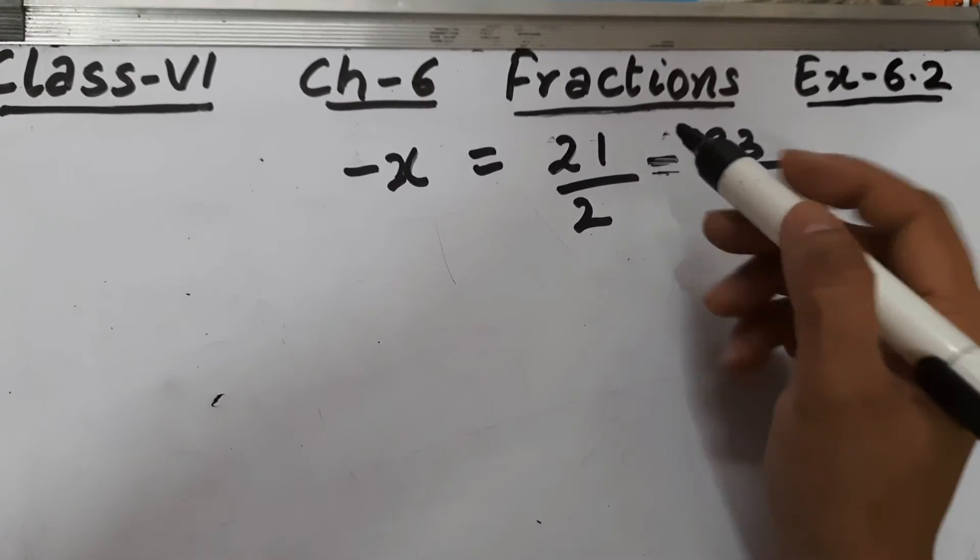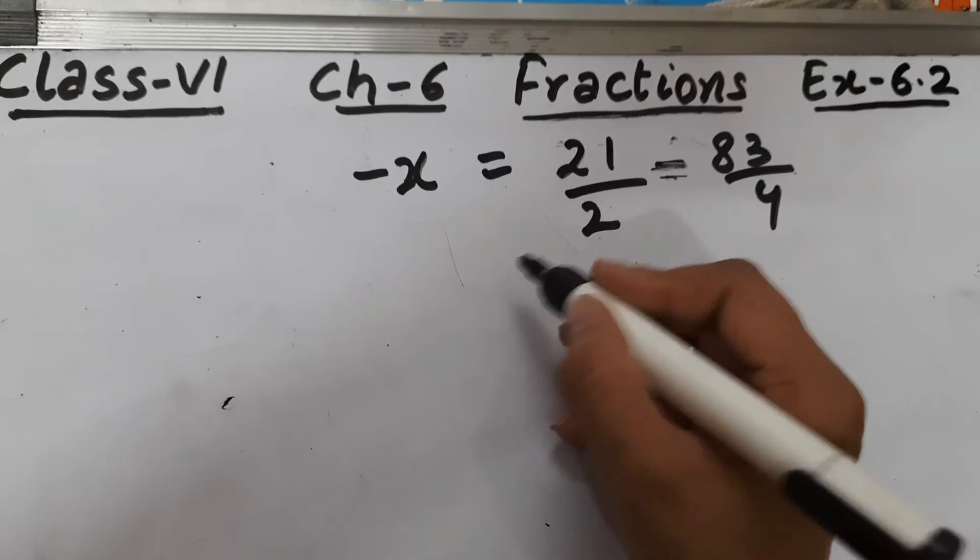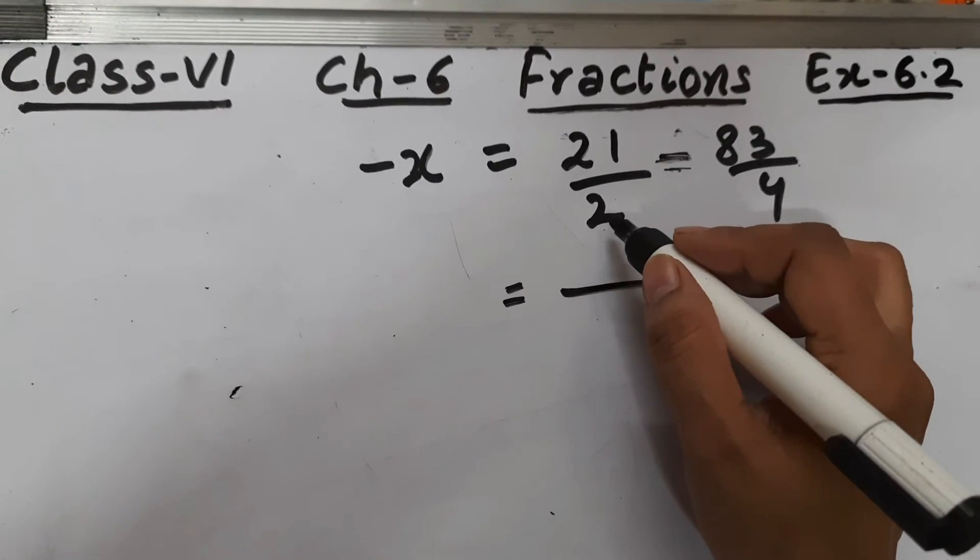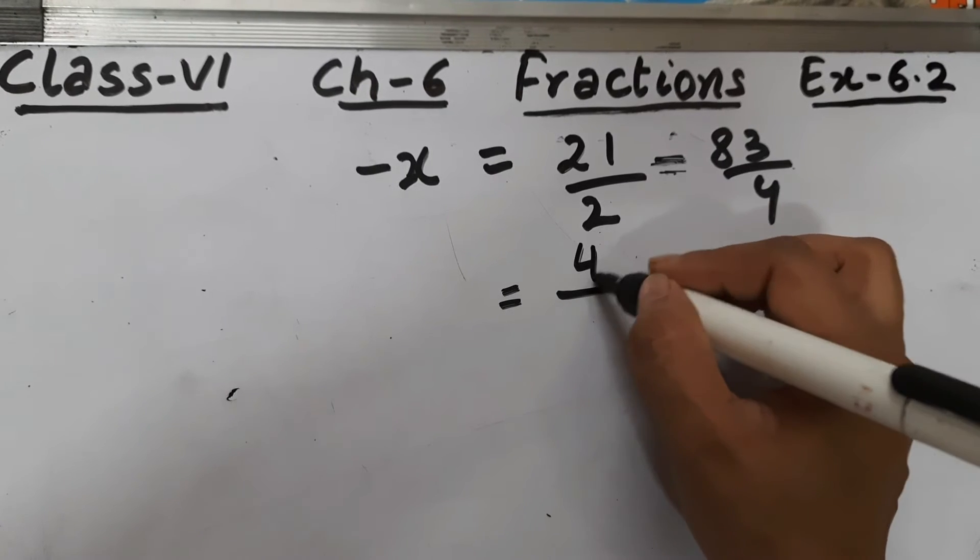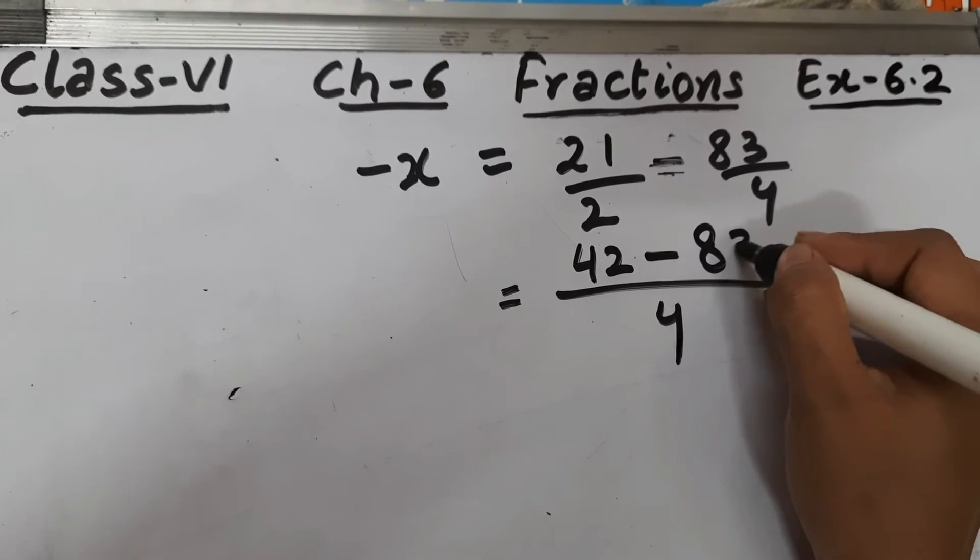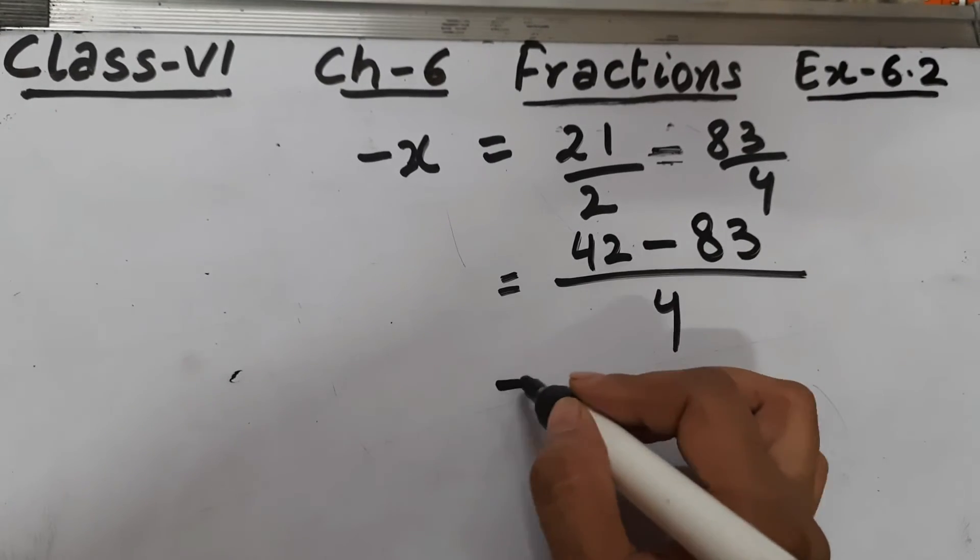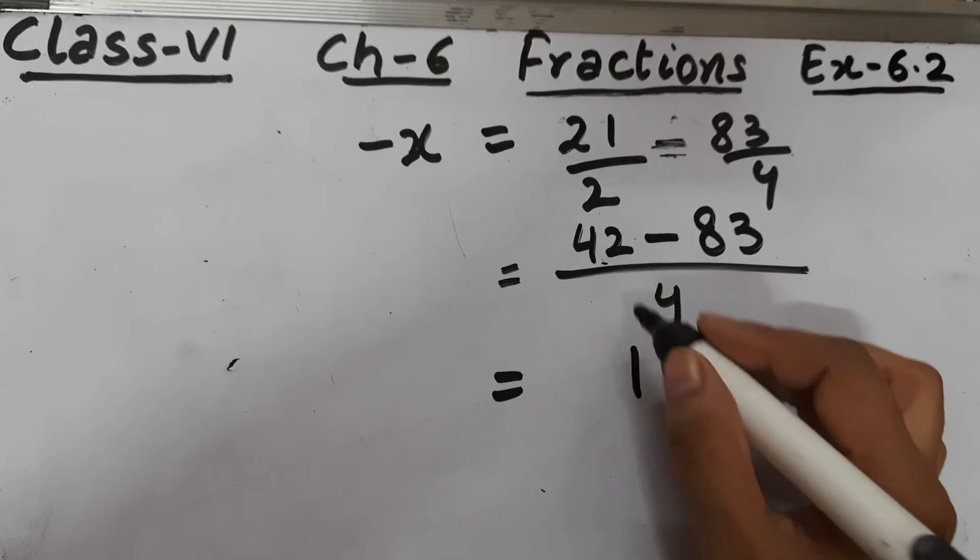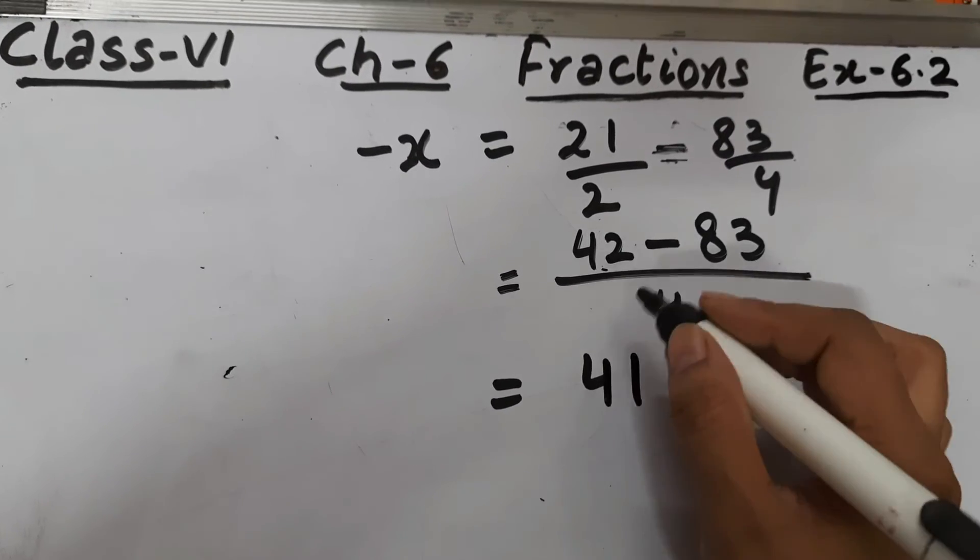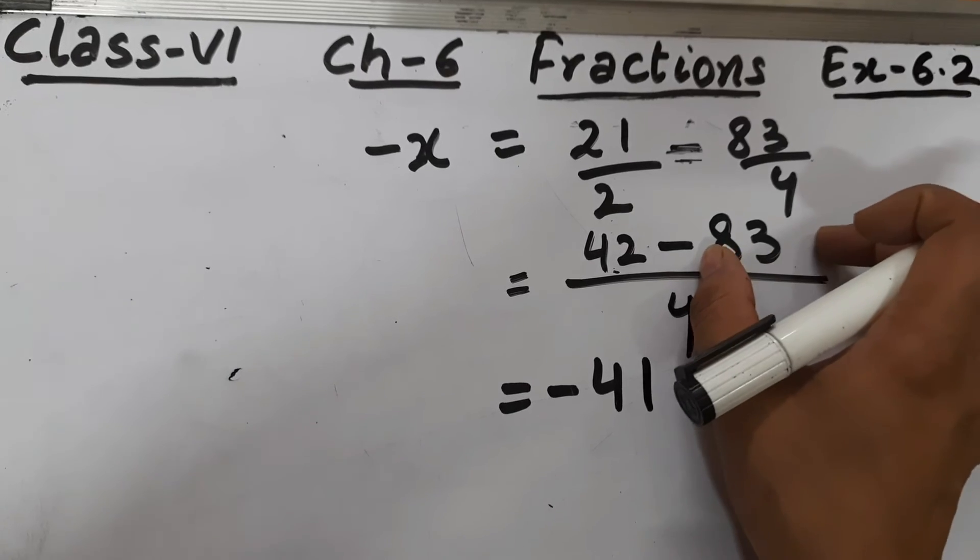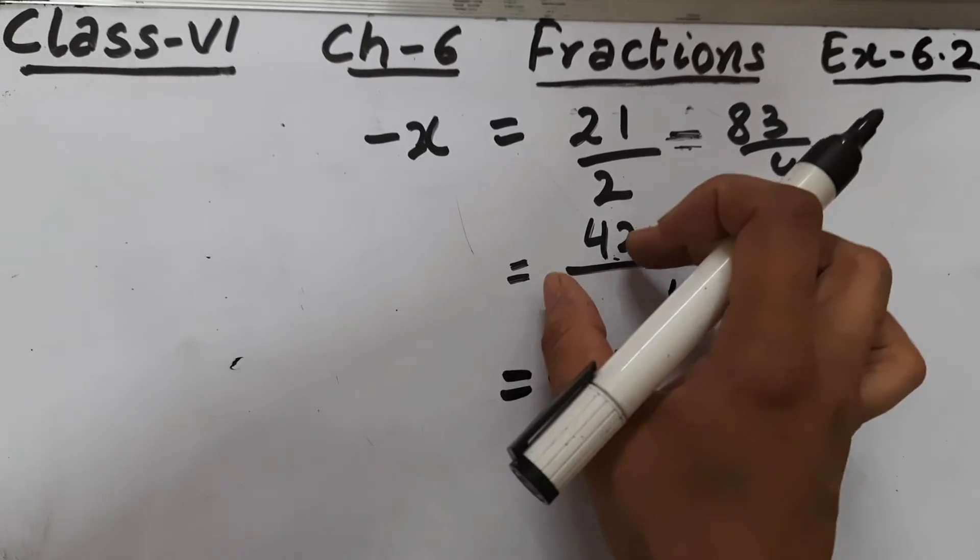Now solve it. LCM will be 4. 4 divided by 2 is 2, 2 multiplied by 21 is 42. Now 4 divided by 4 is 1, and 1 multiplied by 83 is 83. Now we will subtract these two numbers: 3 minus 2 is 1, and 8 minus 4 is 4. But the sign will be negative because this number is greater - 83 is greater than 42 and 83 is minus sign, so your result will be minus. It will be minus 41/4.